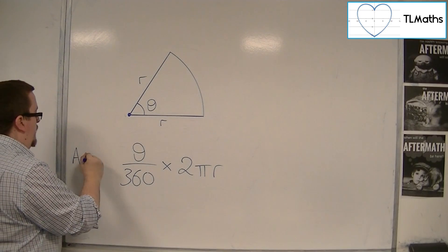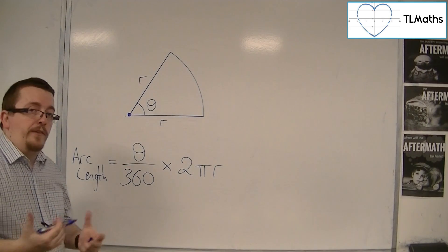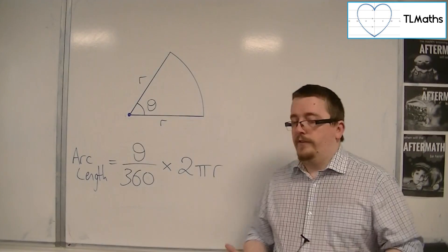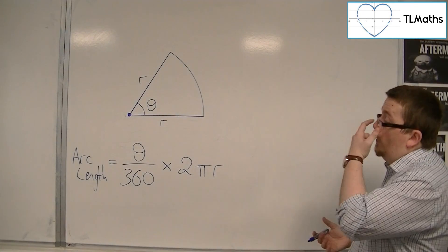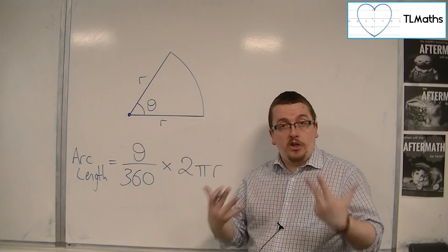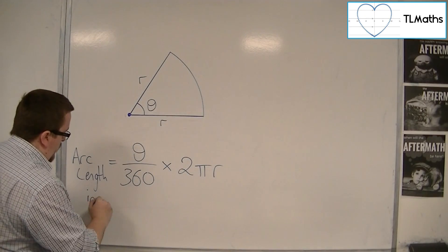Arc length equals this in degrees. Now, if I'm going to convert this into radians, then what I need to understand is that 360 degrees is 2 pi. This is in degrees, I'll write that in degrees.